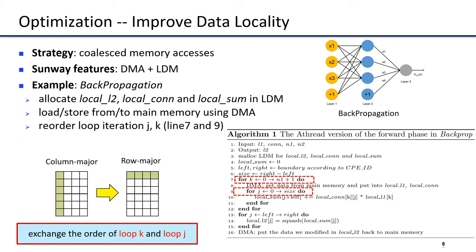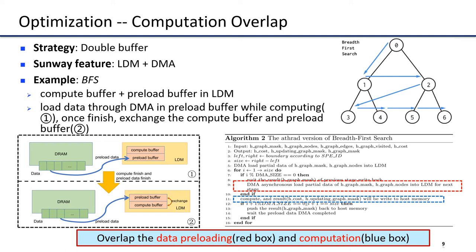The first optimization is to improve the data locality of the program, illustrated using backpropagation as an example. In the AThread version, we allocate three arrays in LDM and transfer data from main memory to LDM using DMA. However, in the original serial code, array access is in column-major pattern, which is not friendly to DMA operations. So we exchange the order of loop j and loop k, as shown in Algorithm 1. Then the array is accessed in row-major pattern continuously, so it can be transferred to LDM through DMA easily.